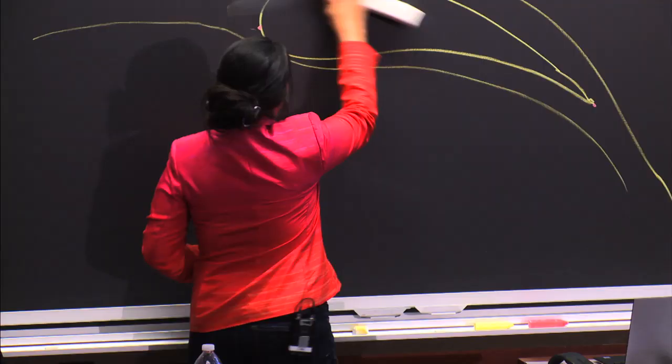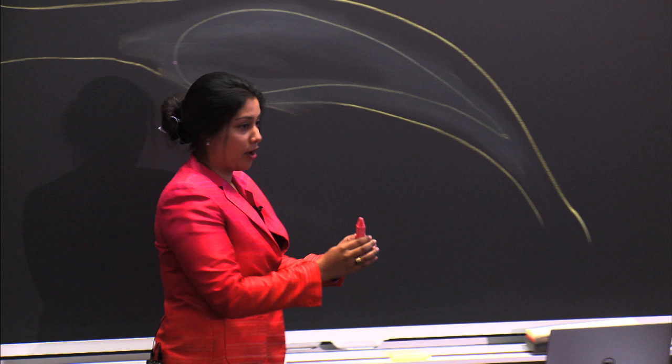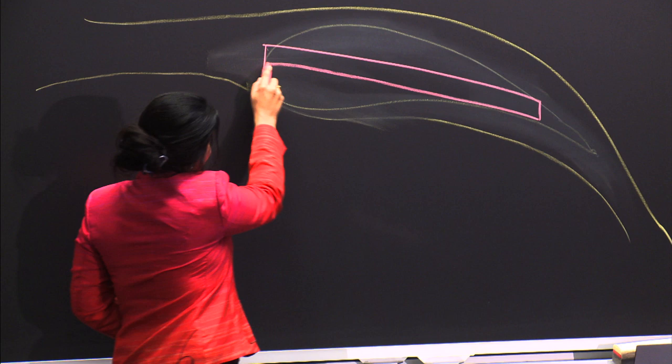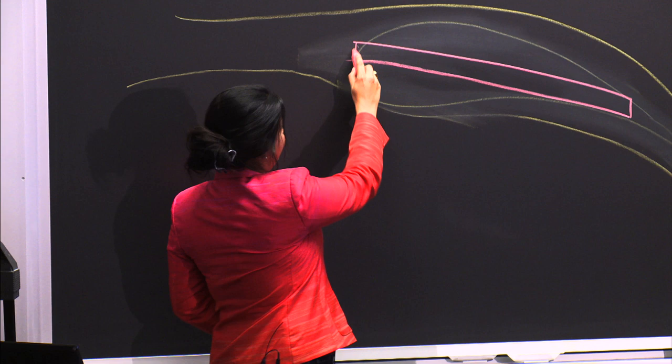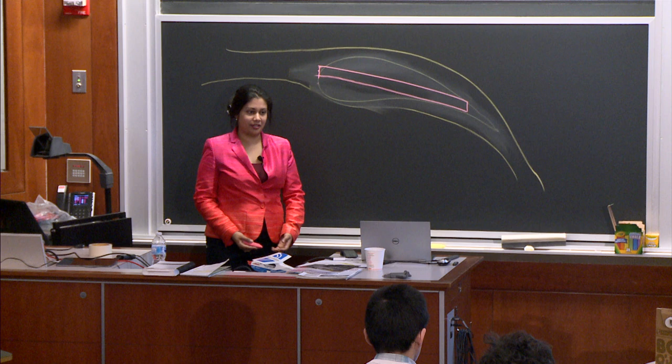So the distance that an air molecule would have to travel over the top and the bottom is identical. The equal transit theory completely falls apart. Yet a paper airplane still flies — so why is that the case?